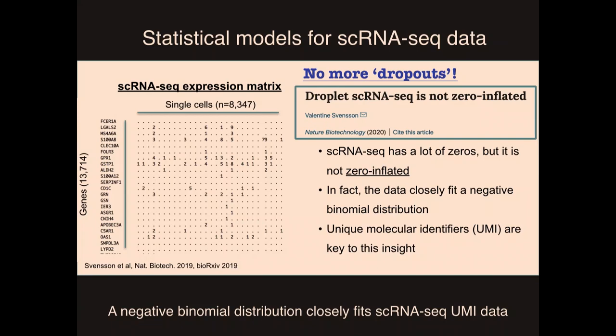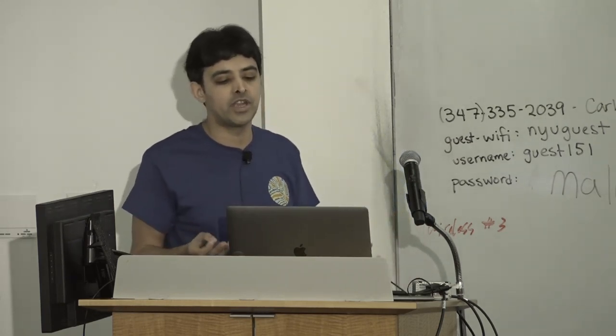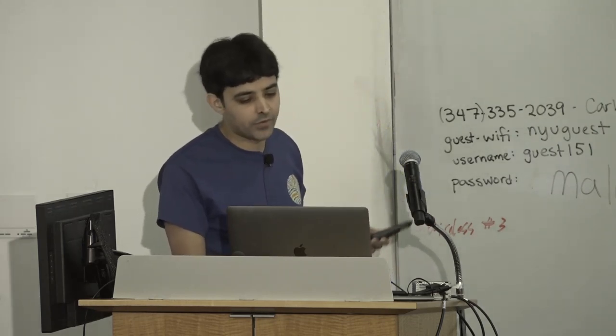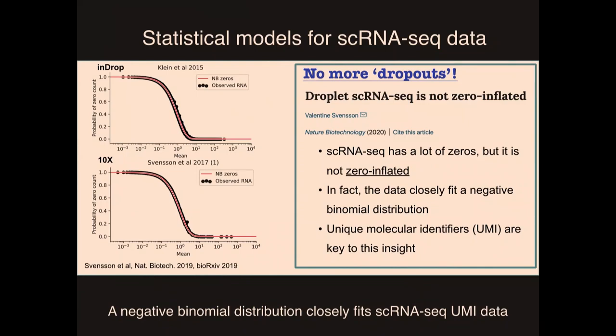If you take that into account, you realize that single-cell RNA-seq data is not zero-inflated. That means we don't need a whole new set of computational approaches — we can use relatively standard statistical models. Valentin suggested that single-cell RNA-seq data actually fits a standard negative binomial distribution without zero inflation, and he proved this by showing that for each gene he could predict exactly the number of zeros you would get under that model. Now that we have a better statistical understanding, we can design much better computational methods downstream.